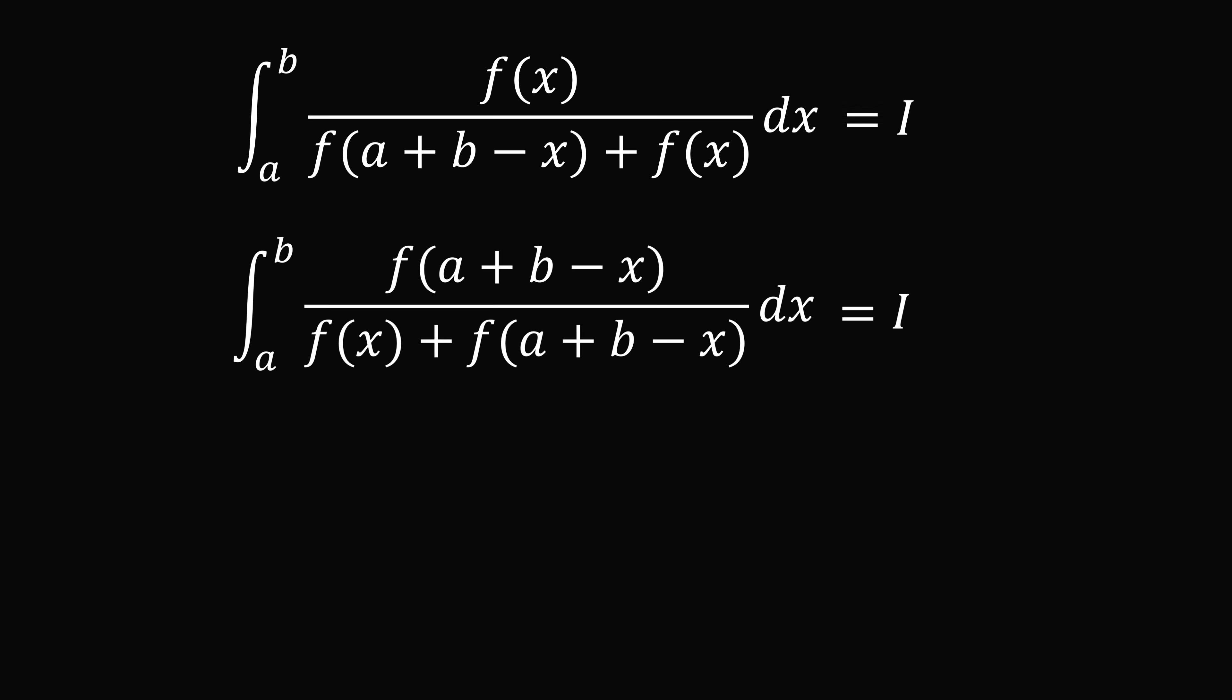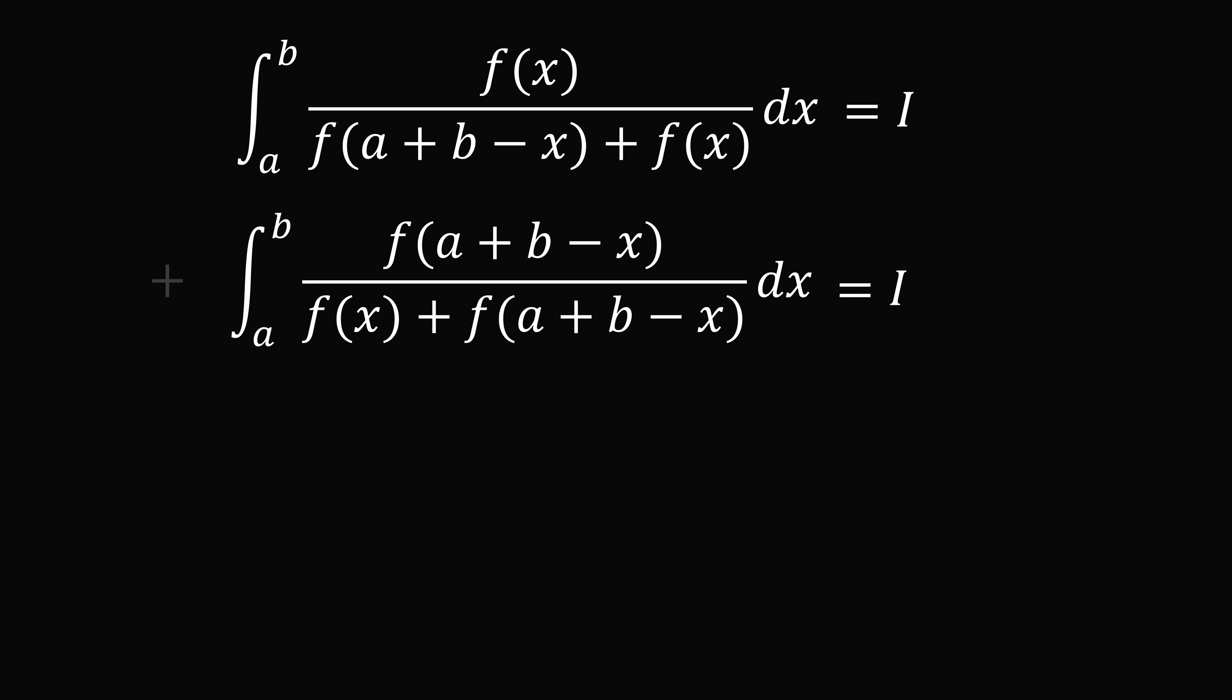So we'll do a trick. We'll add these two integrals together. So when we do that, one result will be 2I. The other result will be the integral from a to b of f(x) + f(a + b - x) over f(x) + f(a + b - x) dx.